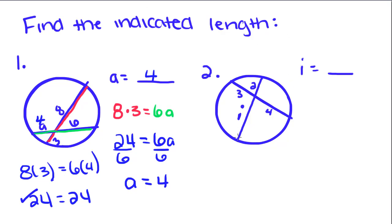Now I want to find the measure of i. This is a 2, by the way, not an a. I'm going to take 2 times i and set it equal to 3 times 4. 2i is equal to 3 times 4, which is 12. To solve for i, I'm going to divide both sides by 2, and I get i is equal to 6.